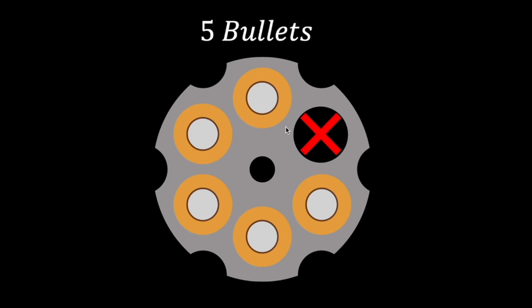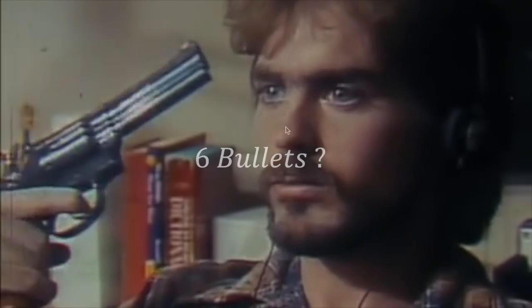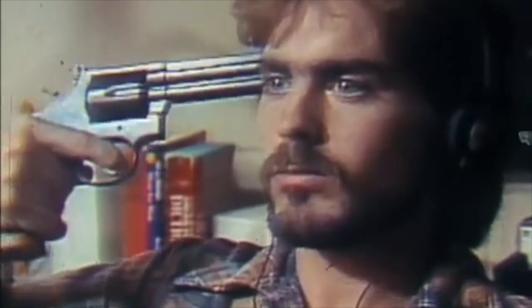What about five bullets? If you're lucky enough to hear a click once, your next shot without a re-spin will always contain a bullet. So you should always ask for a re-spin, for a probability of 1 out of 6 of surviving. For six bullets... this question is too easy for you? Check out this other one from Jane Street.